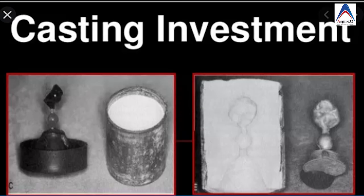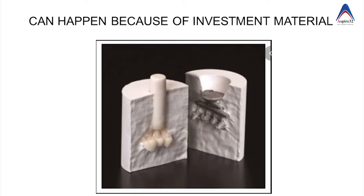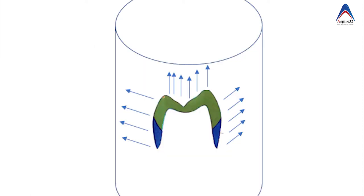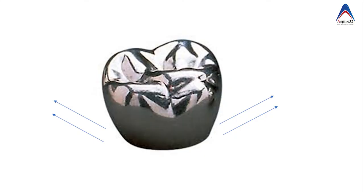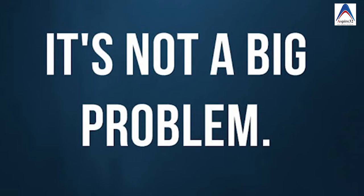The second reason for distortion is the investment material in which the wax pattern is invested. The metal used to make the cast restoration will shrink when cooling down, and to compensate this we have to expand our mold. During this expansion, the thin portion of the wax pattern may not resist the expansion compared to the thick portion. Fortunately, this distortion is very minimal.